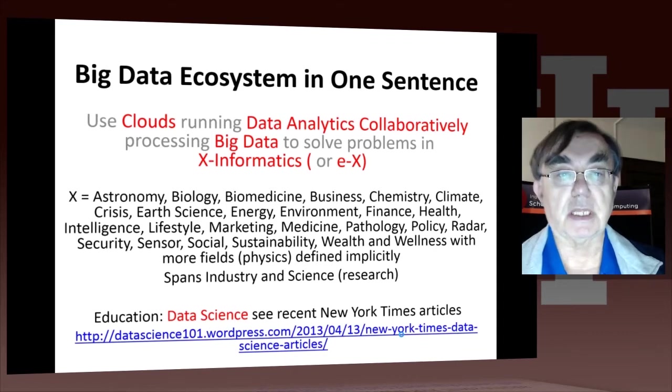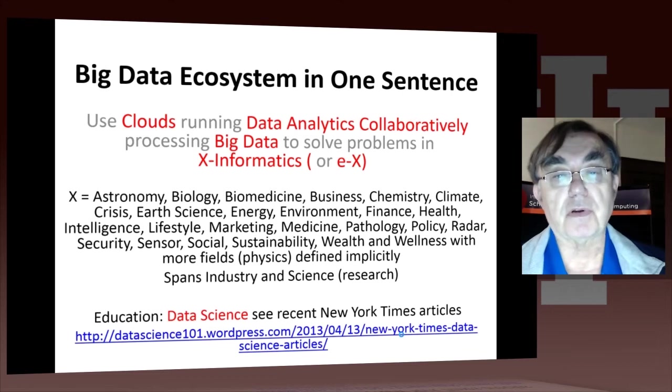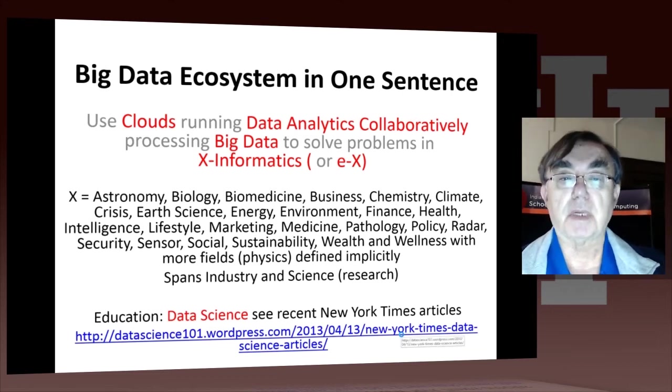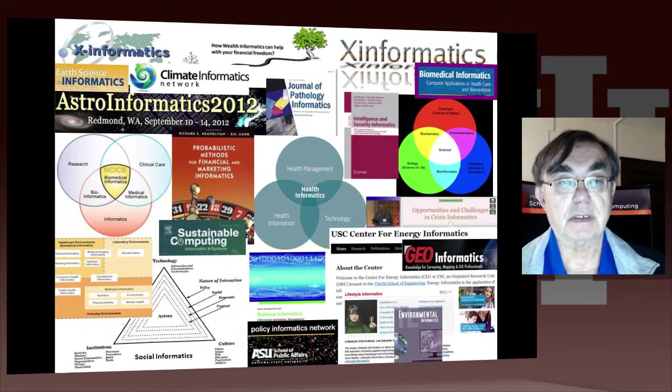As always, we're using clouds, running data analytics collaboratively. Collaborative filtering and the k-nearest-neighbor algorithm are very good examples of data analytics algorithms. We're processing big data—we saw previously how much data Amazon, eBay, Netflix, etc. have on rankings—and we're solving problems in X informatics, for all values of X.